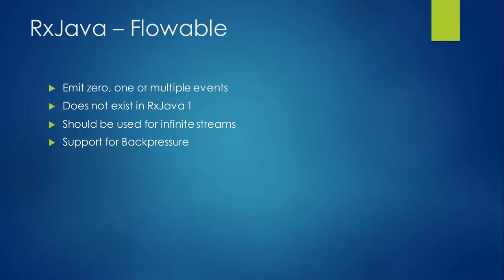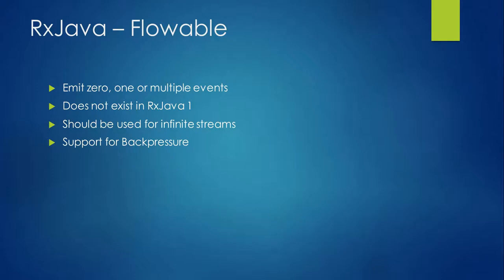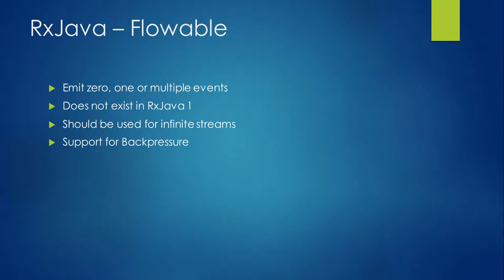Then we have Flowable, which is pretty much similar to Observable. Flowable comes in RxJava 2, so you don't have it in RxJava 1. Flowable can also emit zero, one, or multiple events, but it has a more specific usage. Flowable is really good when you have infinite streams — for example, an integration with a messaging queue where you never know when an event is going to be produced. Flowable offers built-in support for backpressure, something we'll cover later in the course. So think of flowable when you're dealing with infinite streams.